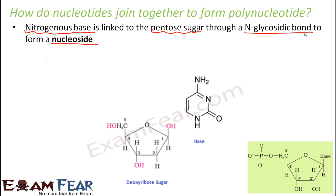Now the sugar again can be a ribose or a deoxyribose. Looking at the sugar shown on screen, you can see that one oxygen is less — only one oxygen is there, the other oxygen has been removed. So that is why it is deoxyribose sugar.